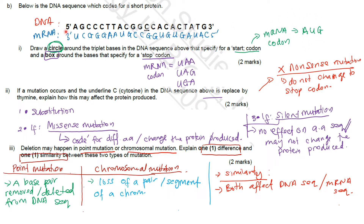Given in the question is the DNA sequence. To find the mRNA codon, you have to find the complementary mRNA sequence according to the DNA sequence. You just write the complementary base pairing. For example, if you have 5' in the DNA, on the mRNA you have 3'. A pairs with U, G with C, C with G, and so on until you produce a complete mRNA strand.